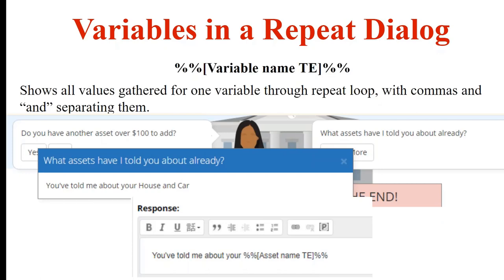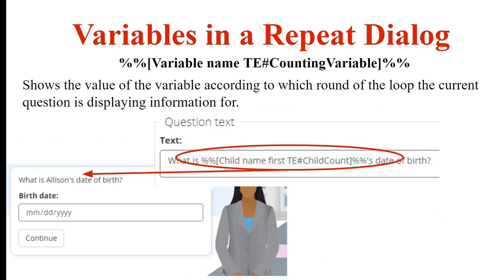This allows you to display back to the end user what they've already told you about at the point where you're asking if they need to go through the loop again — it creates a helpful reminder list. You can also call specific iterations by using the format variable-name pound counting-variable in your macro. For example, ChildFirstNameTE#ChildCount will display only the name for the current loop iteration. So the question might read 'What is Allison's date of birth?' then 'What is Christopher's date of birth?' — only the relevant single value, not all values.